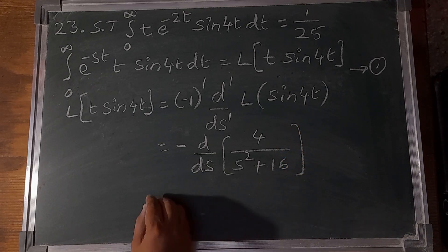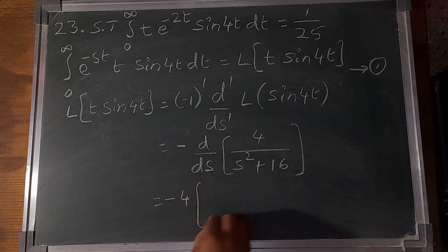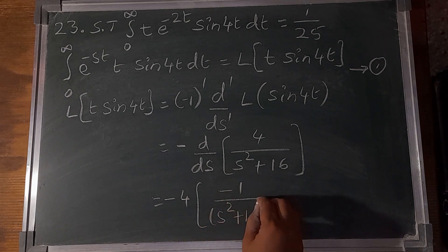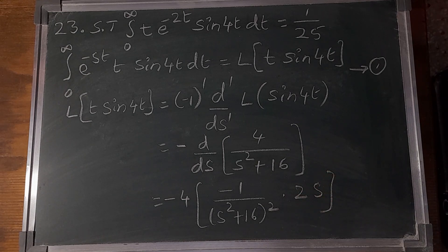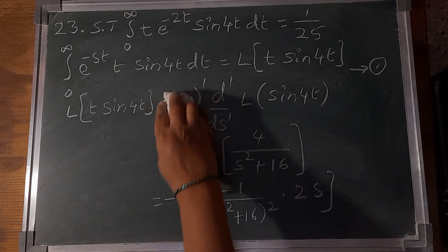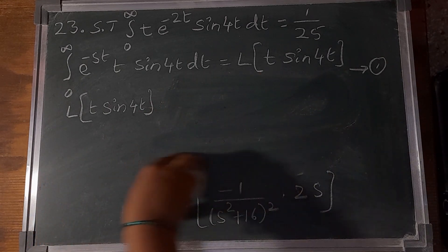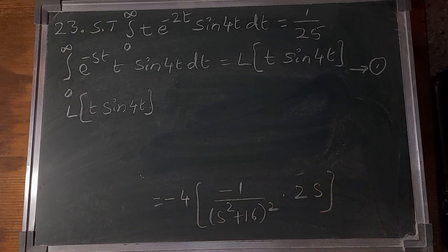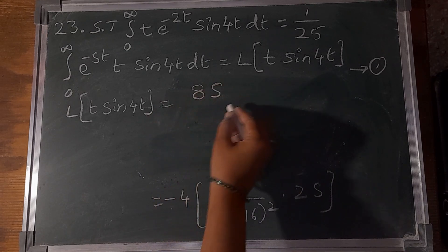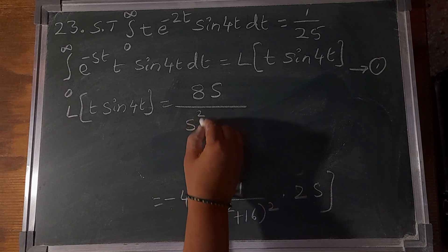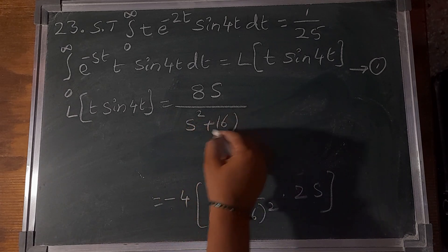Taking the differentiation: minus [-4 × 2s / (s² + 16)²] = 8s/(s² + 16)². Call it equation number 2.